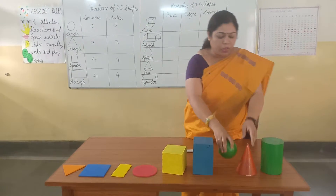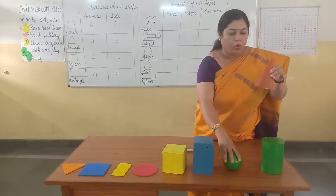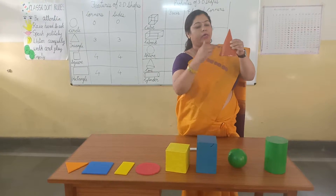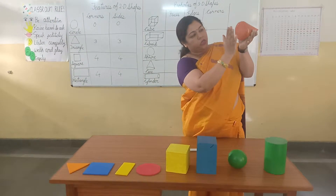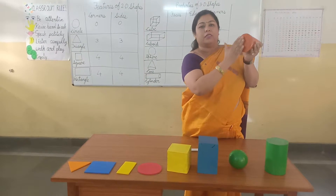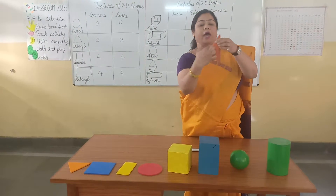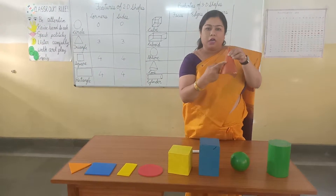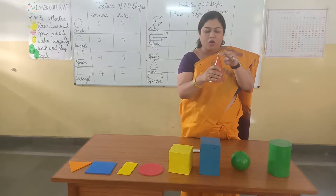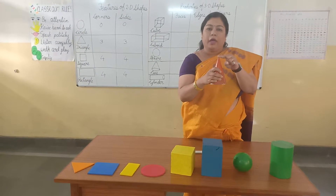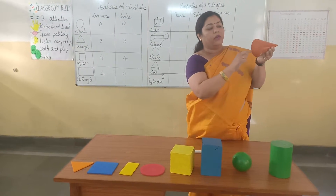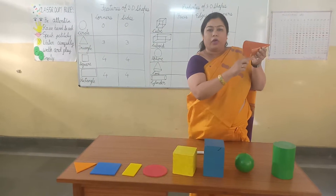The next shape is a cone. You can see, cone has 2 faces — the first face is a flat face and the second face is a curved face. It has only 1 corner, which is called the tip, and 1 circular edge.